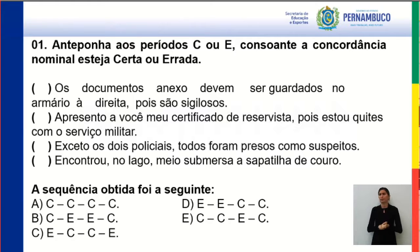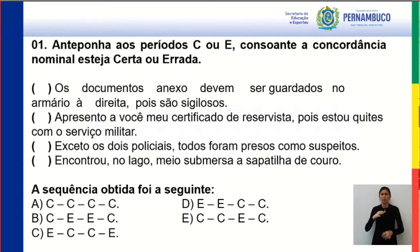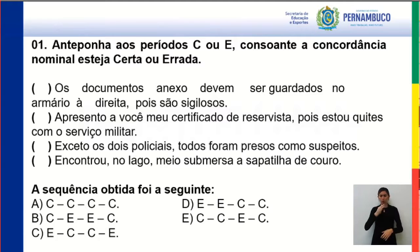Olha o segundo parêntese: 'Apresento a você meu certificado de reservista, pois estou quites com o serviço militar.' Tá errado. Primeira pessoa no singular — é 'estou quite' com o serviço militar. Se fosse 'estamos', primeira pessoa do plural, aí sim: estamos quites. O verbo 'estou' está na primeira pessoa do singular.